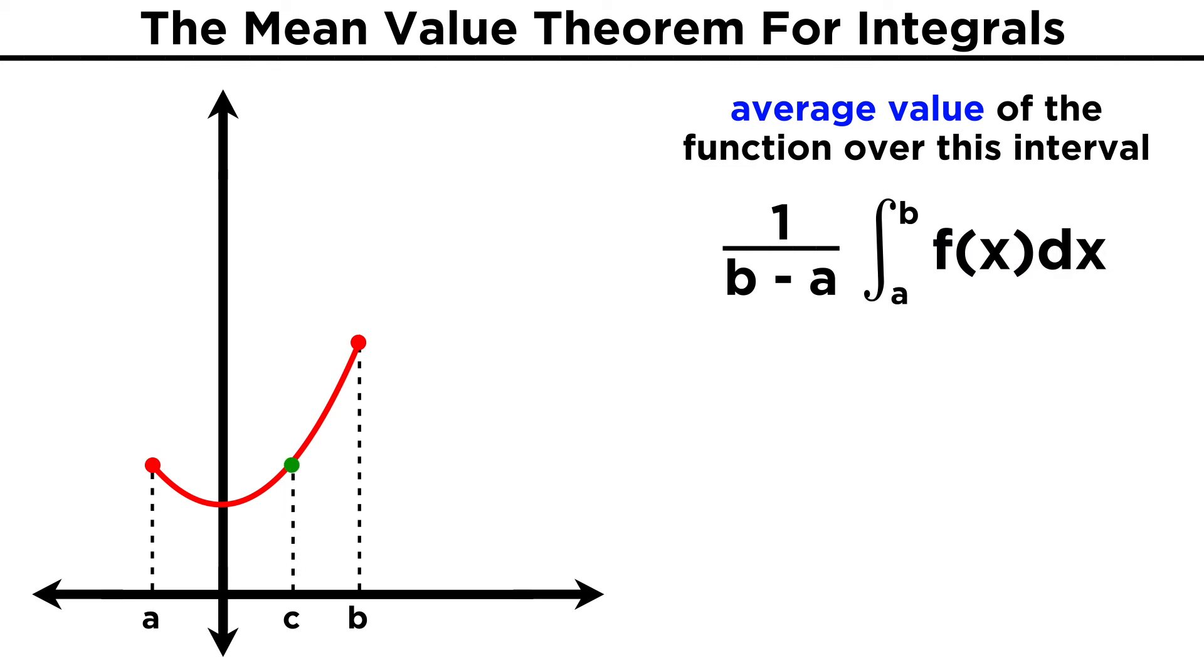This shouldn't be too surprising, because it means that there is some value, c, for which the antiderivative evaluated at b minus the antiderivative evaluated at a, divided by the quantity b minus a, gives us the average value of the function.